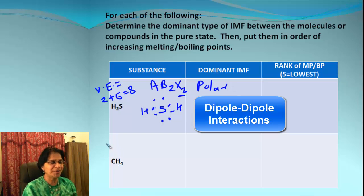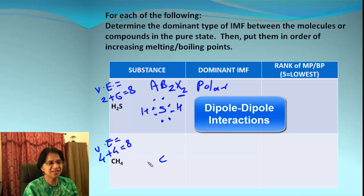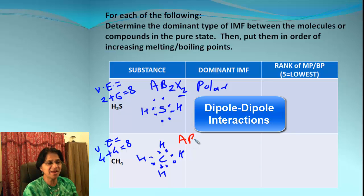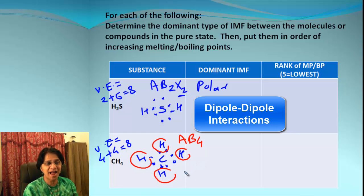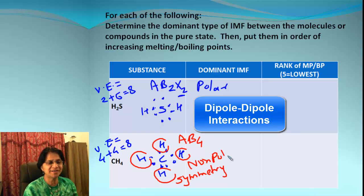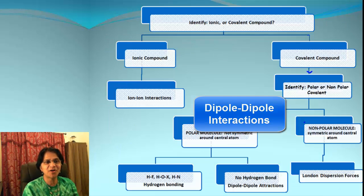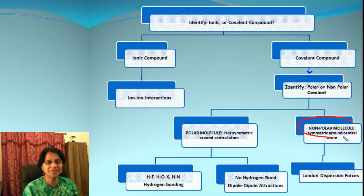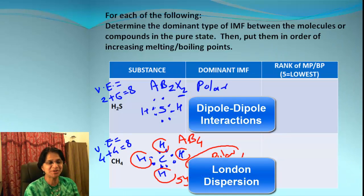The next one is CH₄, methane. Valence electrons from carbon and hydrogen are 4 and 4, equal to 8. The Lewis dot structure gives an ABX formula of AB₄ — there is no X, no unbonded electrons. Each surrounding atom is the same, meaning the molecule has symmetry, and if the molecule is symmetrical, that makes it a nonpolar compound. So on our chart, this is a nonpolar molecule, and the dominant IMF will be London dispersion.